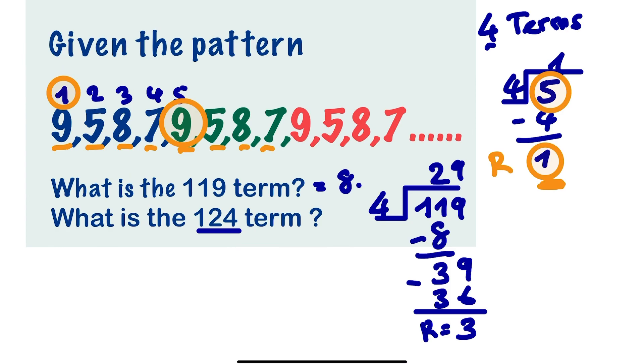Now let's look at the next question. What happens if we divide 124 divided by the number that is repeating, 4? We are going to get 31 remainder 0. So what do we do when we have a remainder of 0?